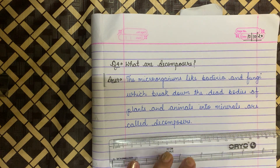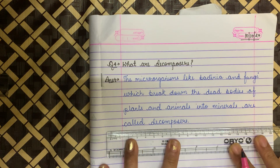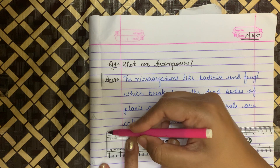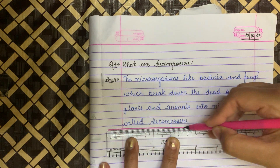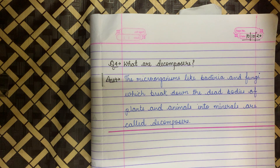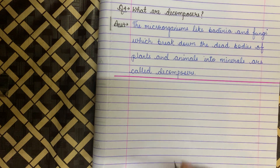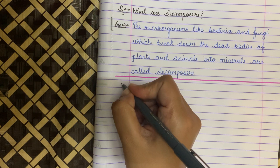Leave one line after this and draw a line with a sketch pen. Note it down. Then write down question number 5 with a black pen.